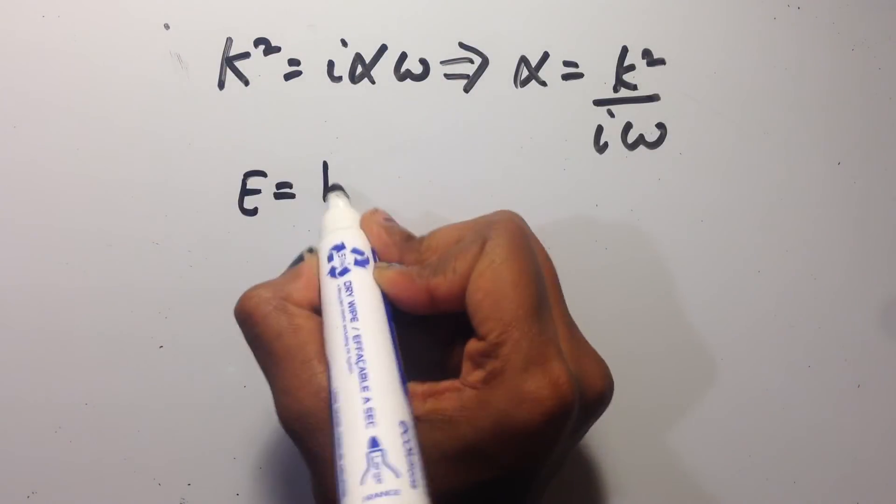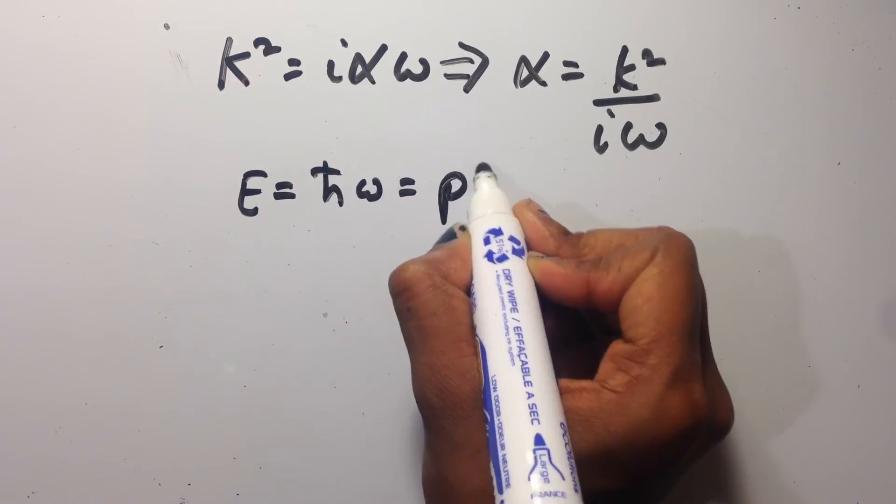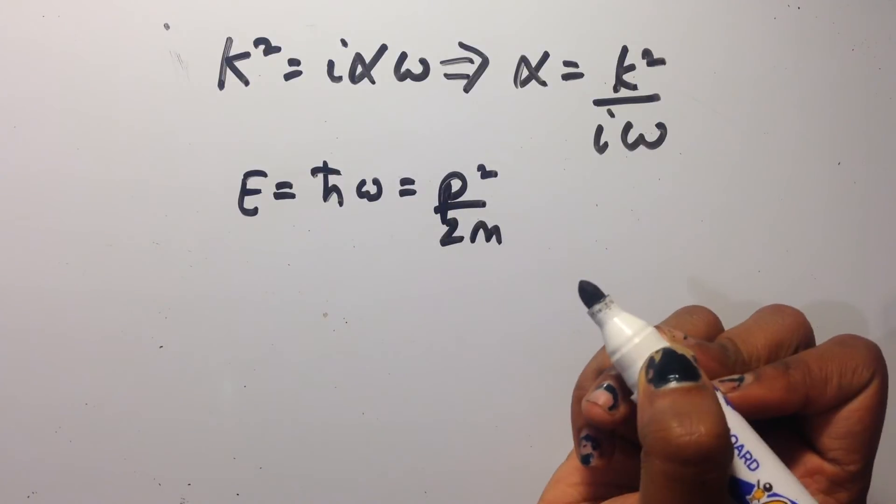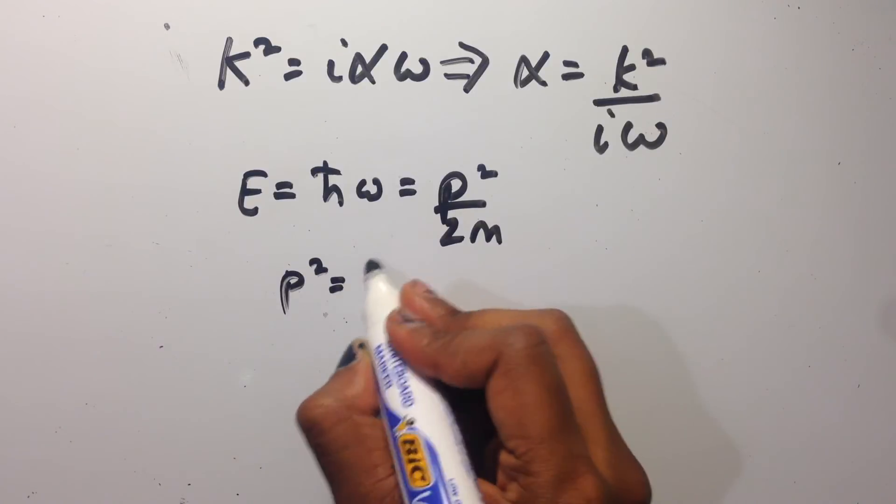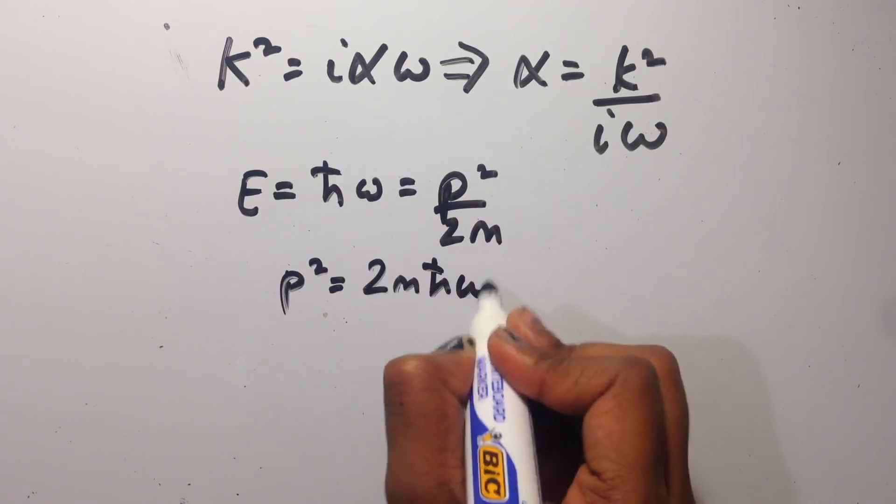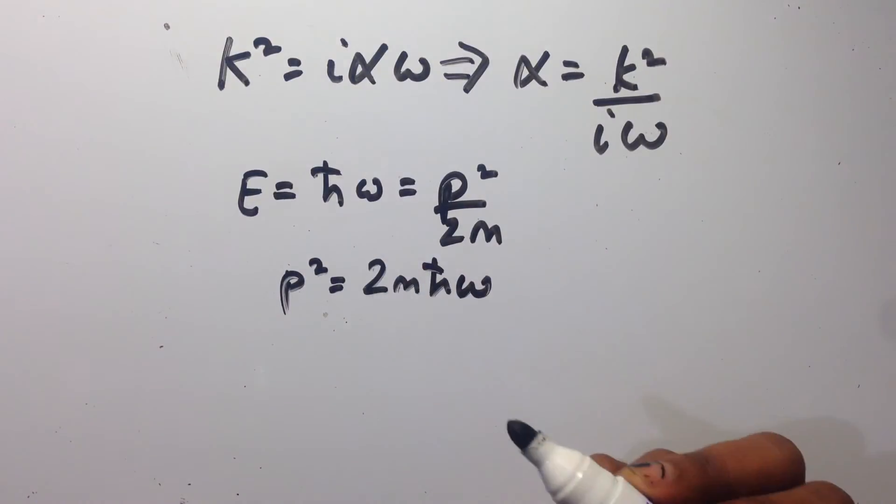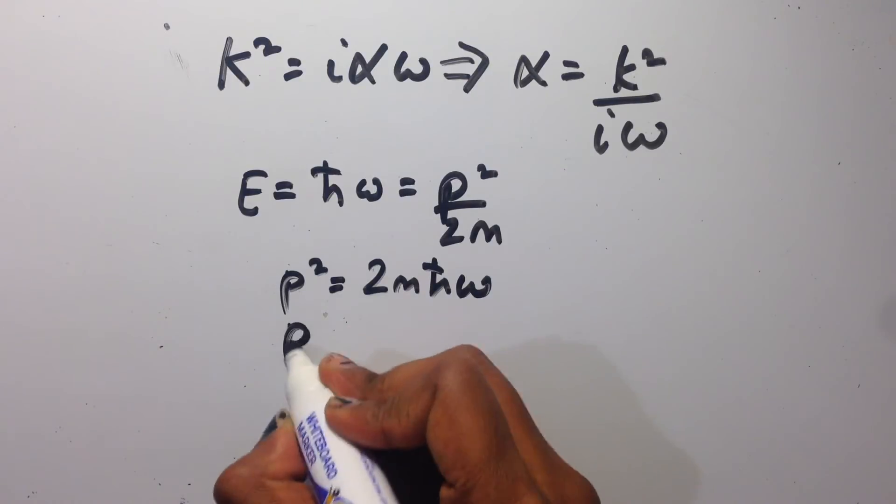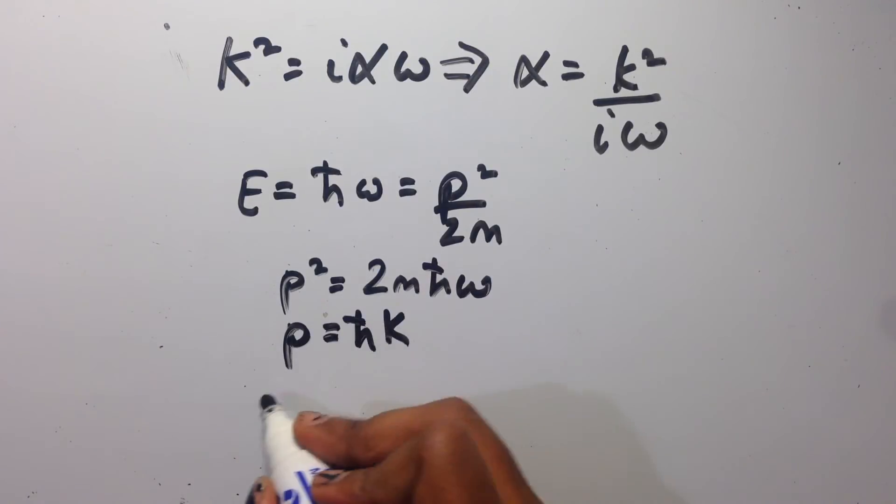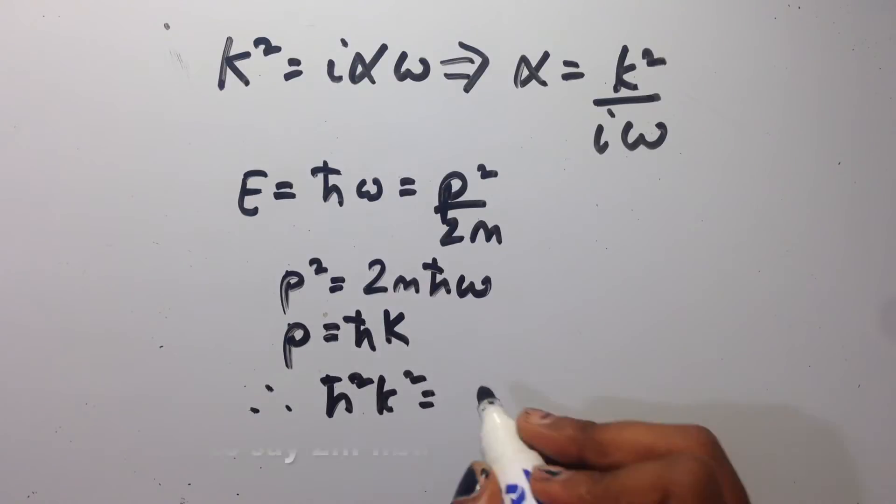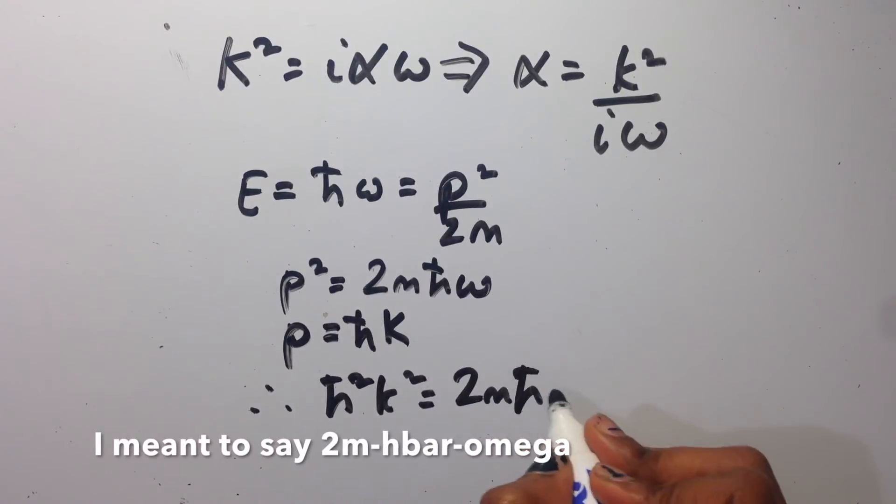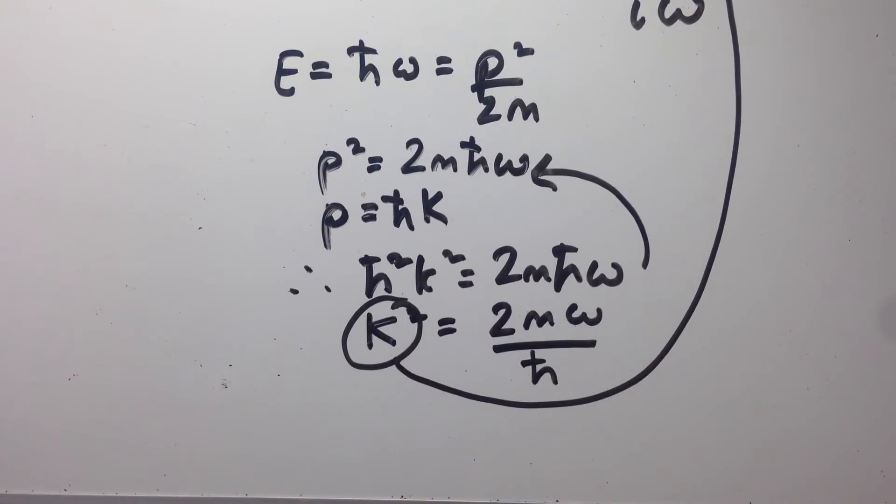Since E equals h bar omega which is equal to p squared over 2m. Rearranging for p squared gives us 2m h bar omega. And since p equals h bar k, we then obtain h bar squared k squared equals 2m h bar k. Rearranging for k squared gives us this equation. And subbing this into our alpha equation gives us alpha equals 2m over i h bar.